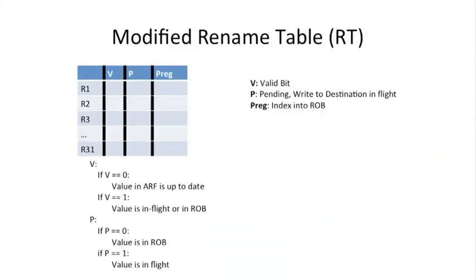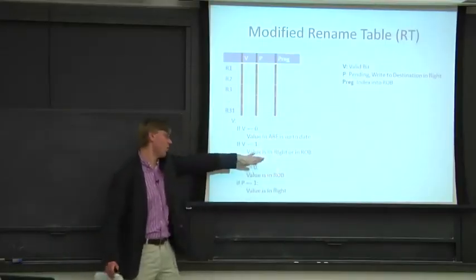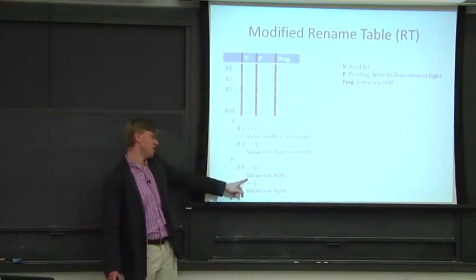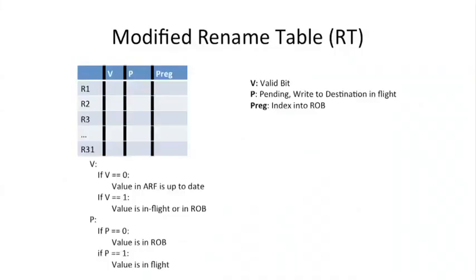For example, if you haven't written to register 2 in a very long time and lots of other instructions execute, the reorder buffer gets filled up with entries for other destination registers. In that case, the canonical place to look is the architectural register file. So we have two bits that indicate where to look: either in the architectural register file, or in flight. If it's in flight and the pending bit P is 1, it's being calculated; if P is 0, it's sitting in the reorder buffer waiting to retire.